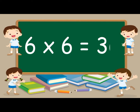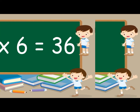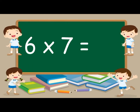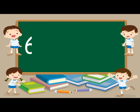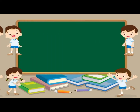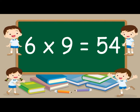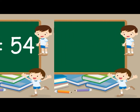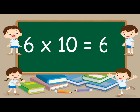Six sixes are thirty-six. Six sevens are forty-two. Six eights are forty-eight. Six nines are fifty-four. Six tens are sixty.